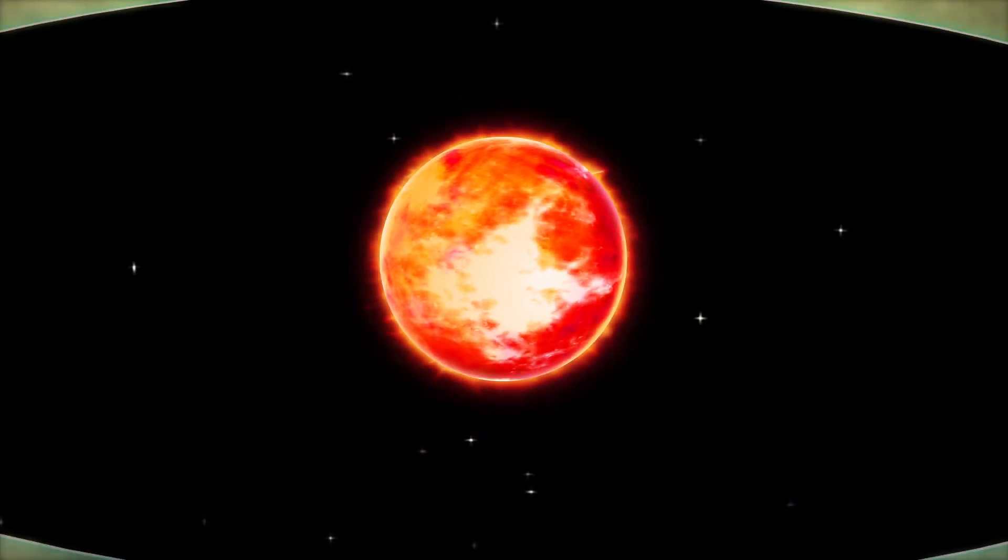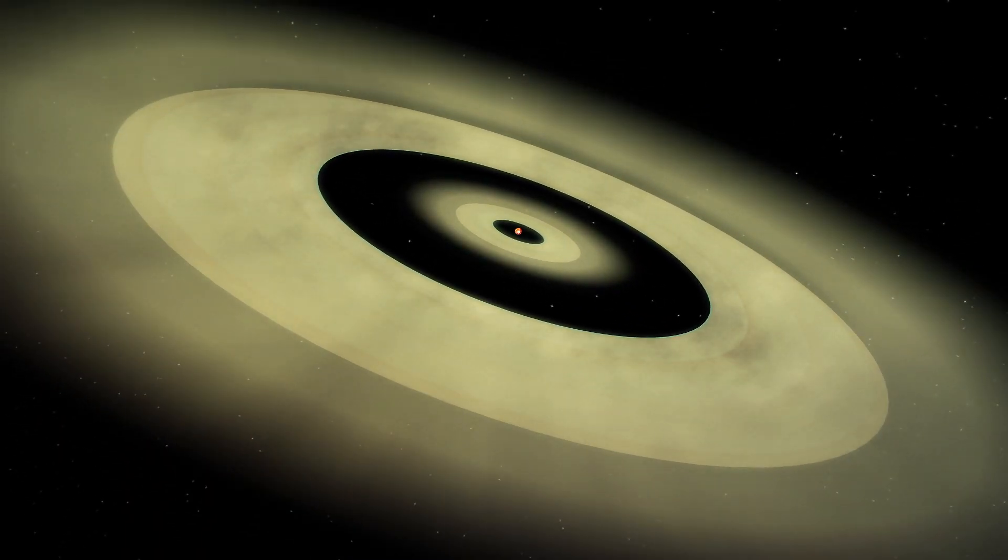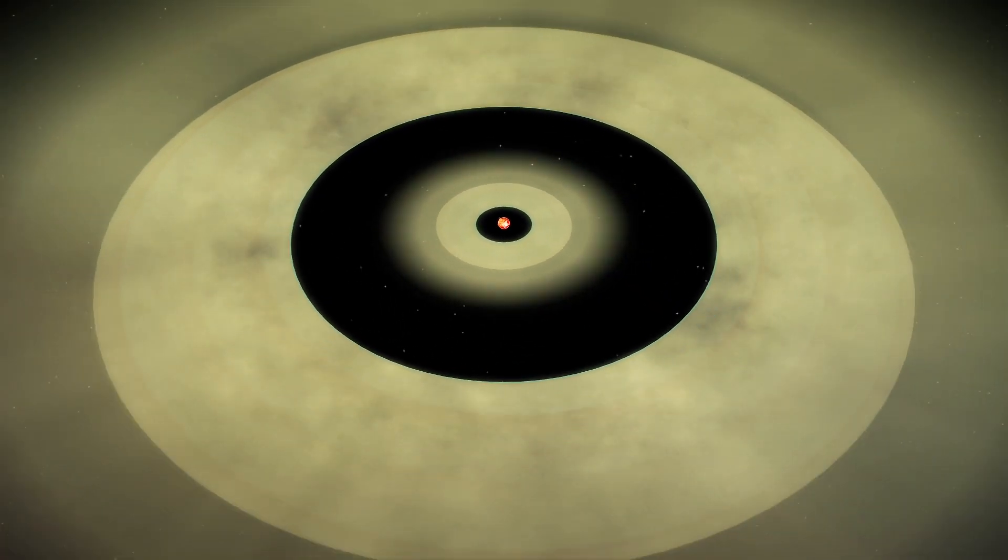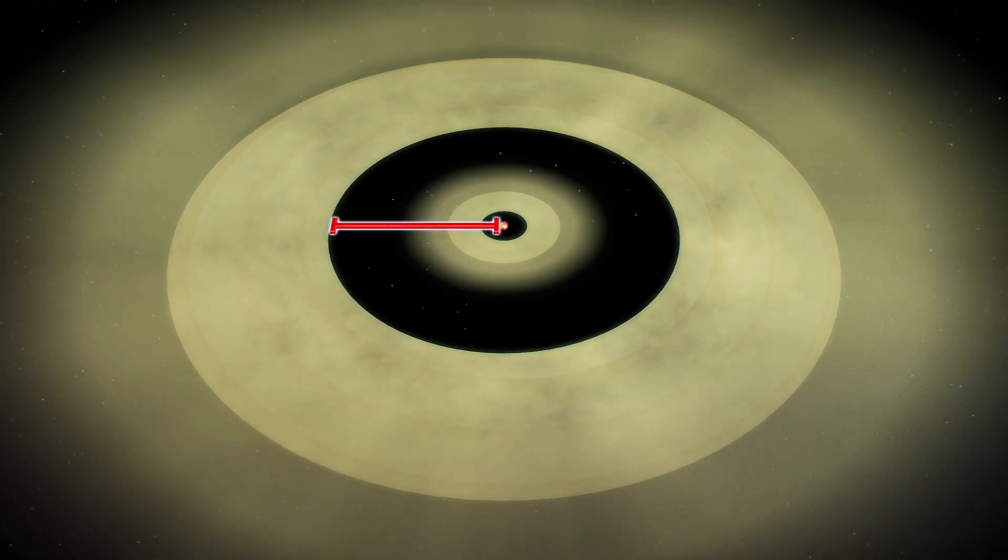Using ALMA, scientists were able to view two rings of dust forming around the star. The inner ring is four astronomical units, known as AU, from the star and the second ring is 20 AU away. Scientists believe this is where the planets are forming.